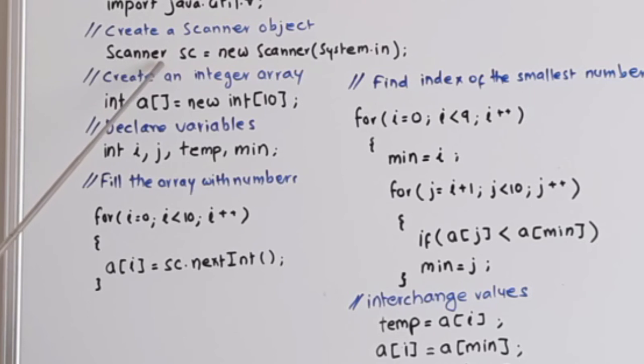sc is the object of the scanner class. Next int is the method in the scanner class. ai equals to sc dot next int. So when you enter 10 numbers, when the for loop is complete we will have an array with 10 different numbers if you enter 10 different numbers. After that we will start to sort the array.